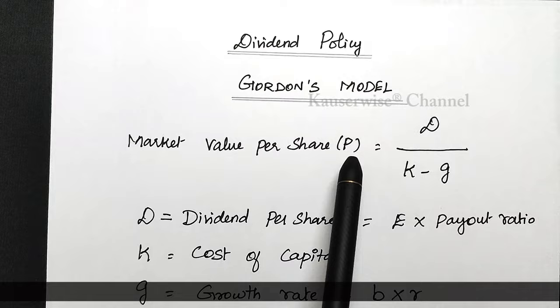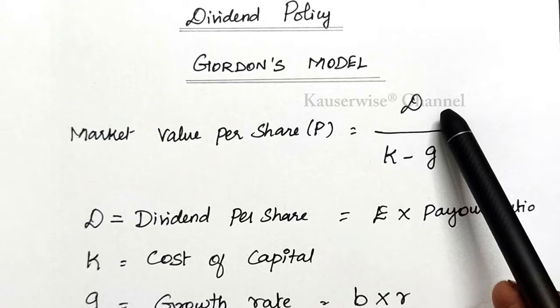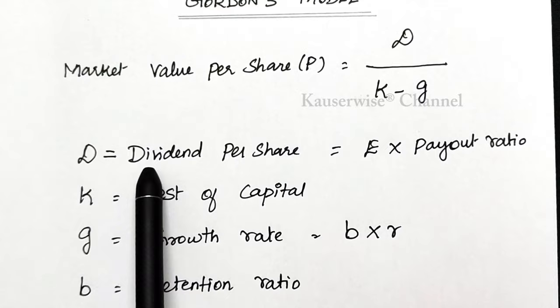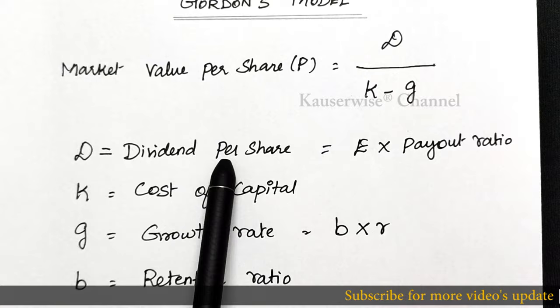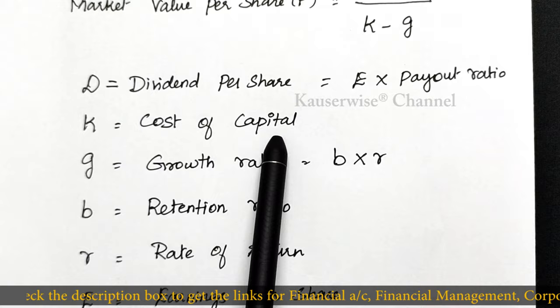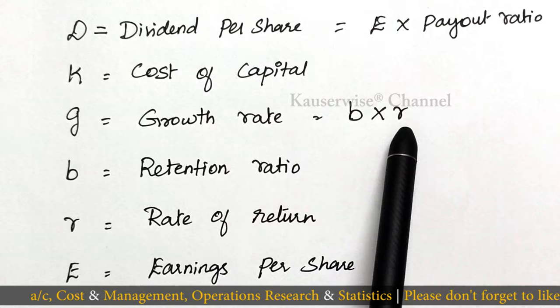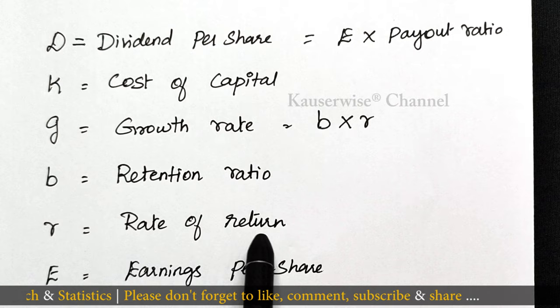This is the simple formula to calculate market value per share: P is equal to D divided by K minus G. D refers to dividend per share. The formula to find dividend per share is earnings per share multiplied by payout ratio. K refers to cost of capital, and G refers to growth rate. The formula to find out growth rate is B into R, where B denotes retention ratio and R denotes rate of return. By multiplying these two, you will get the growth rate.